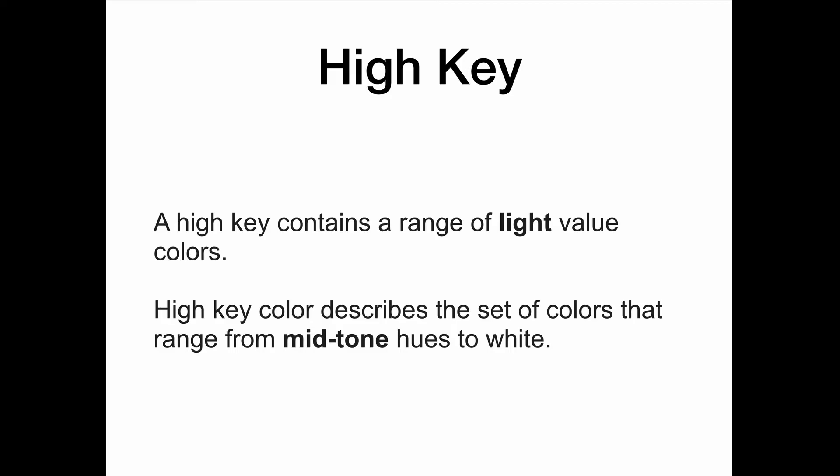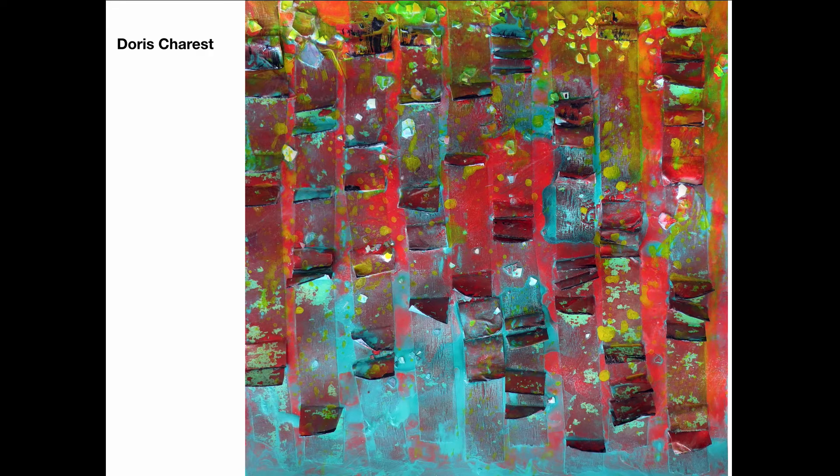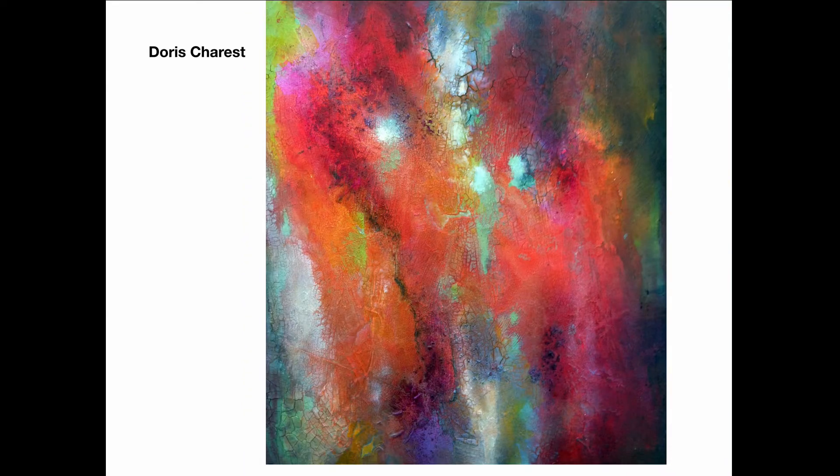Here are some examples of high key colors. I have bright pure color with a little bit of white added to the color, but the colors are mostly bright and light. Here's another high key color painting where you add just bits of white to your color occasionally, but mostly the color is pure. This is when the color is pure or when you add white to it.